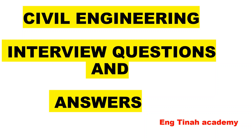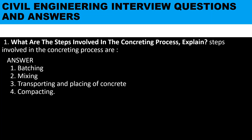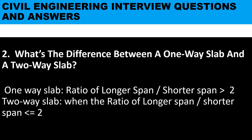If you are new here, don't forget to subscribe, like, share and leave a comment. Question number one: what are the steps involved in the concreting process? The steps involved in the concreting process are: batching — this is where we weigh the aggregates that we are going to use — and then mixing, then transporting, placing, and then compaction.